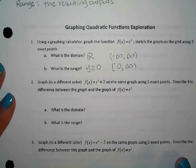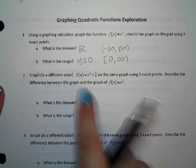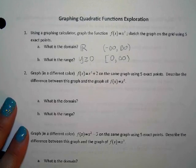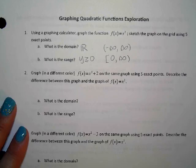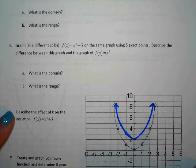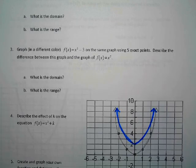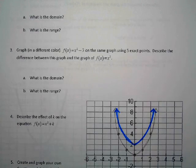The next one says to grab a different color. We're going to switch Desmos to say X squared plus two. I'm going to have you graph a second one. And it says to describe the difference between this graph and the graph of X squared. What do you guys notice? It starts at two rather than zero.